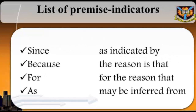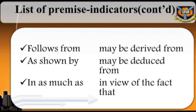The following is a list of premise indicators: since, as indicated by, because, the reason is that, for, for the reason that, as, may be inferred from, follows from, may be derived from, as shown by, may be deduced from, inasmuch as, in view of the fact that.